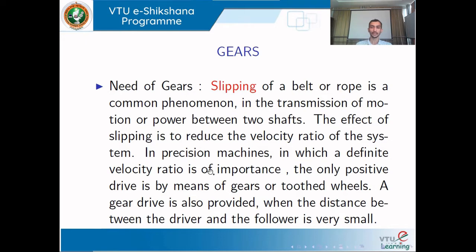Also, because of slipping, the velocity ratio between the two shafts or two friction wheels may not be constant. In precision machines where a constant velocity ratio is very important, you cannot use such modes of power transmission — you must go with gear drives. Another advantage is that whenever the distance between two shafts is very small, gear drives can be easily accommodated.